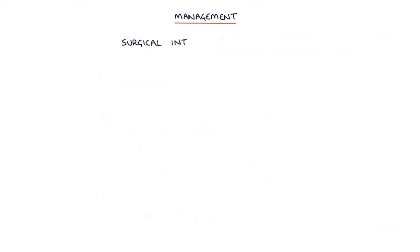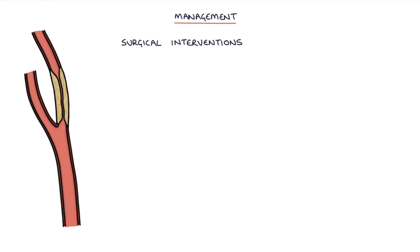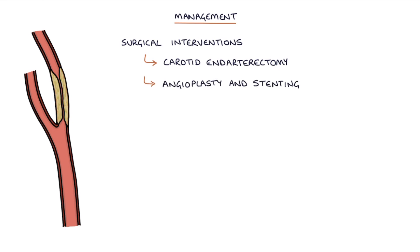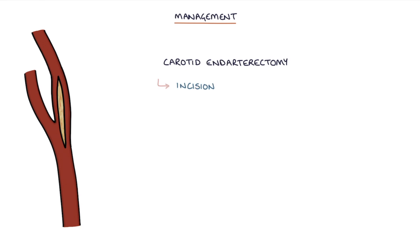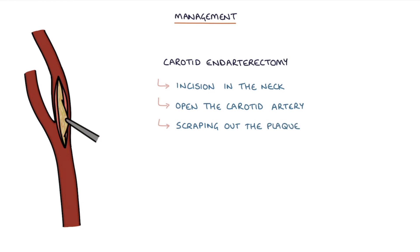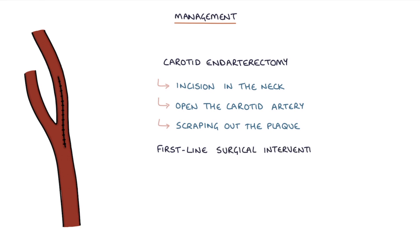Surgical interventions are considered where there's more significant stenosis, and the options are carotid endarterectomy or angioplasty and stenting. Endarterectomy involves an incision in the neck, opening the carotid artery and scraping out the plaque. This is the first-line treatment for most patients who require surgical intervention. A key complication of the procedure is a stroke, which occurs in around 2% of cases.